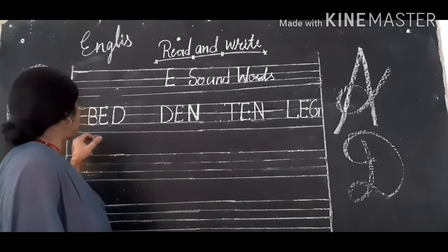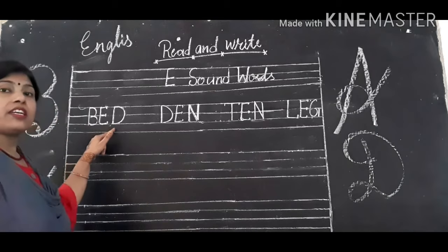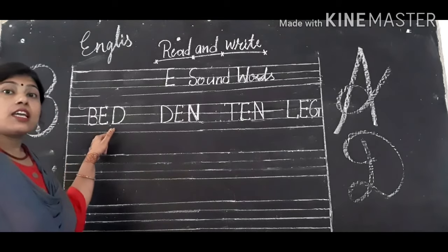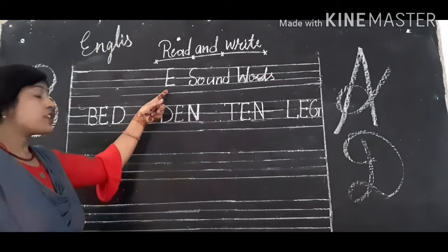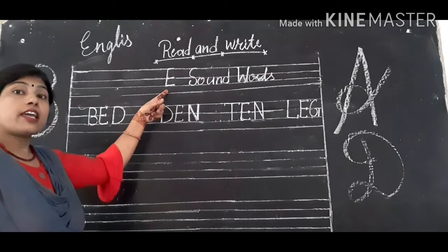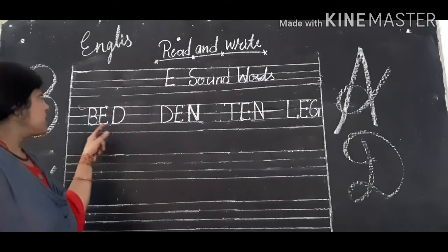And learn it also. You will study English and learn it. Like this: B, E, D — Bed. E sound. B, E, D — Bed.